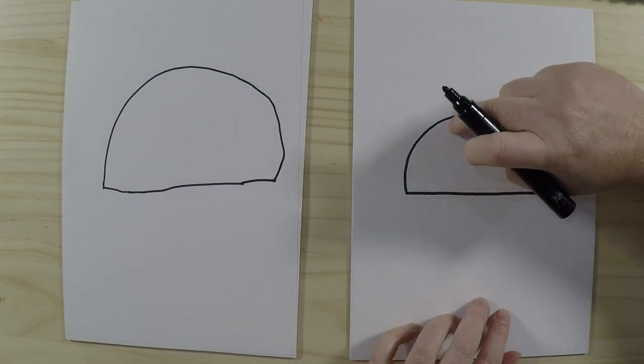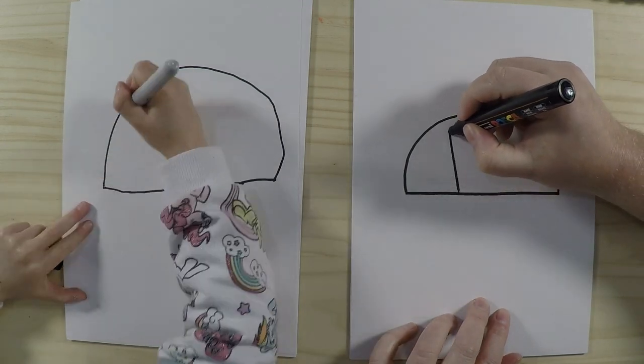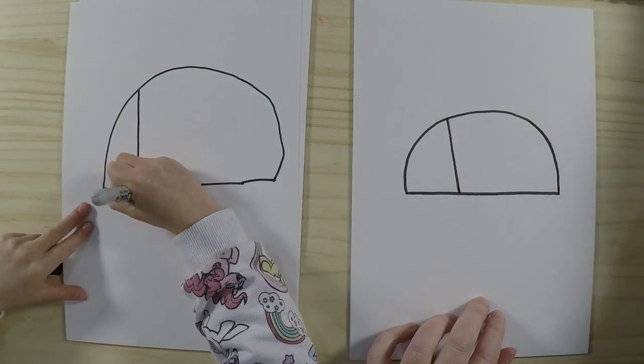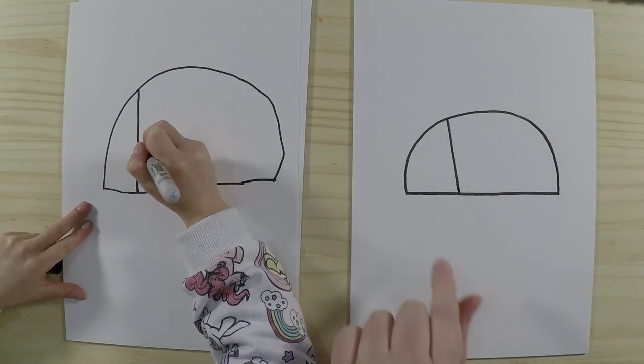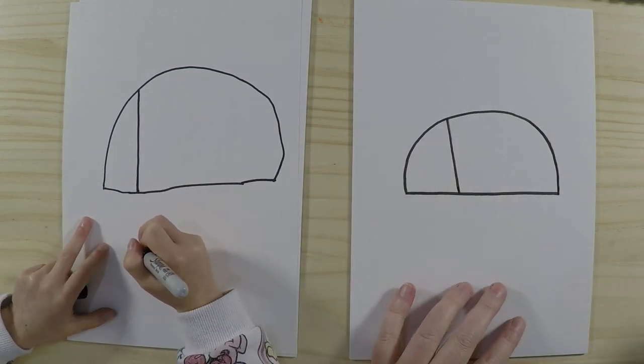So the next thing we're going to draw is a little line on this side here at a bit of an angle. Right there. Head. Yeah, so that will separate the head on this side and the body on that side. So let's draw the head.